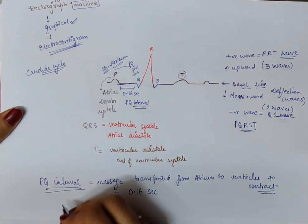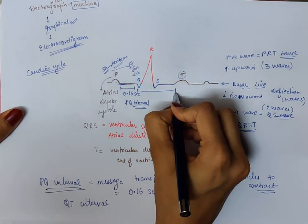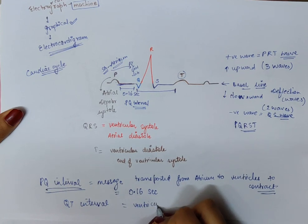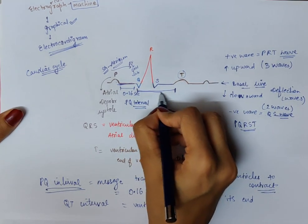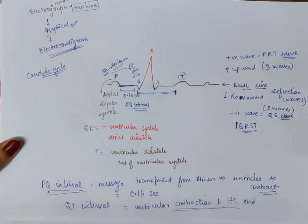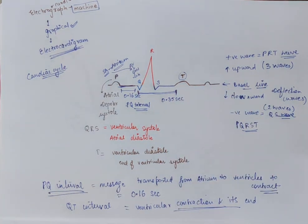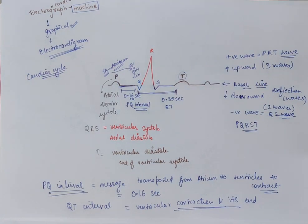There is another interval known as the Q-T interval. The Q-T interval represents the ventricular contraction and its end. This Q-T interval lasts for 0.35 seconds. So P-Q is 0.16 seconds and Q-T is 0.35 seconds.